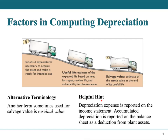The depreciation expense account is a regular expense account reported on the income statement with a normal debit balance. The accumulated depreciation account is a contra-asset account — reported right underneath the asset it's contrary to, such as equipment, building, or furniture. Therefore it is reported on the balance sheet and represents a deduction from plant assets.